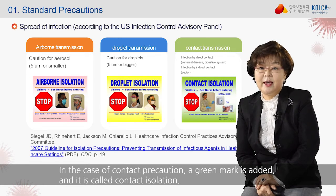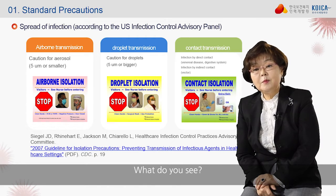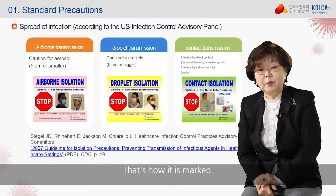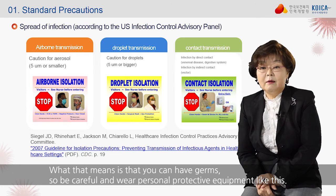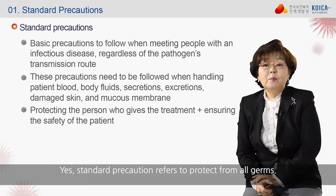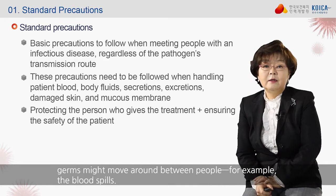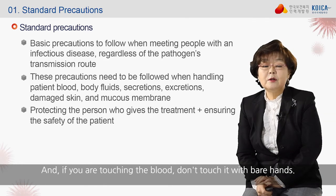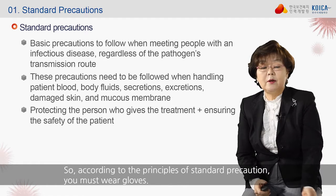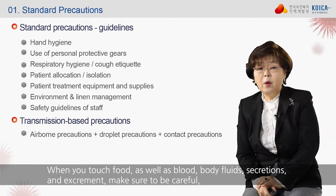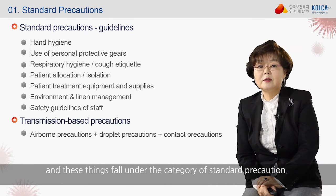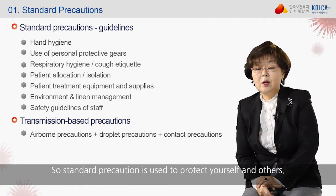For contact precaution, a green mark is added — called contact isolation. You'll find you need to wear a gown and gloves. That means you may have germs, so wear personal protective equipment. Standard precaution refers to protection from all germs. Regardless of whether there is a pathogen or not, germs might move around between people — for example, blood spills. If you are touching blood, don't touch it with bare hands; you must wear gloves. When touching blood, body fluids, secretions, and excrement, be careful. Standard precaution is used to protect yourself and others.